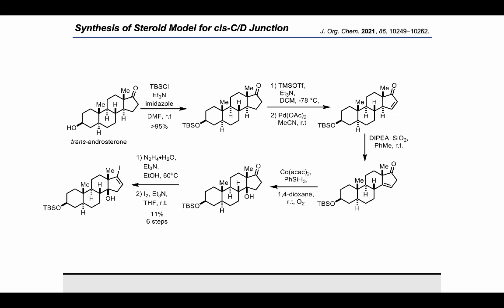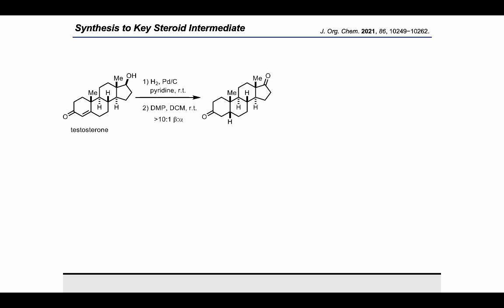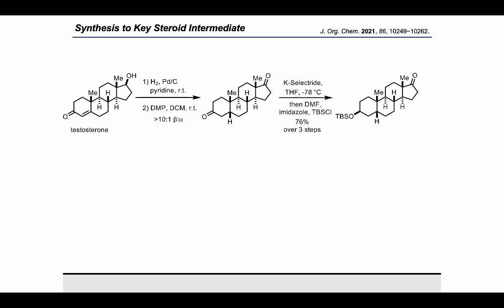The model steroid reactions helped provide a proof of concept for development of the natural steroid core. To this end, testosterone was selectively reduced via hydrogenation, followed by DMP oxidation to give the diketone intermediate in a 10 to 1 DR. The diastereomers could not be separated at this stage, so the mixture was carried forward. The C3 ketone was then selectively reduced with K-selectride and subsequently protected with TBS chloride, which allowed for separation of the two diastereomers and produced an overall yield of 76% over 3 steps.